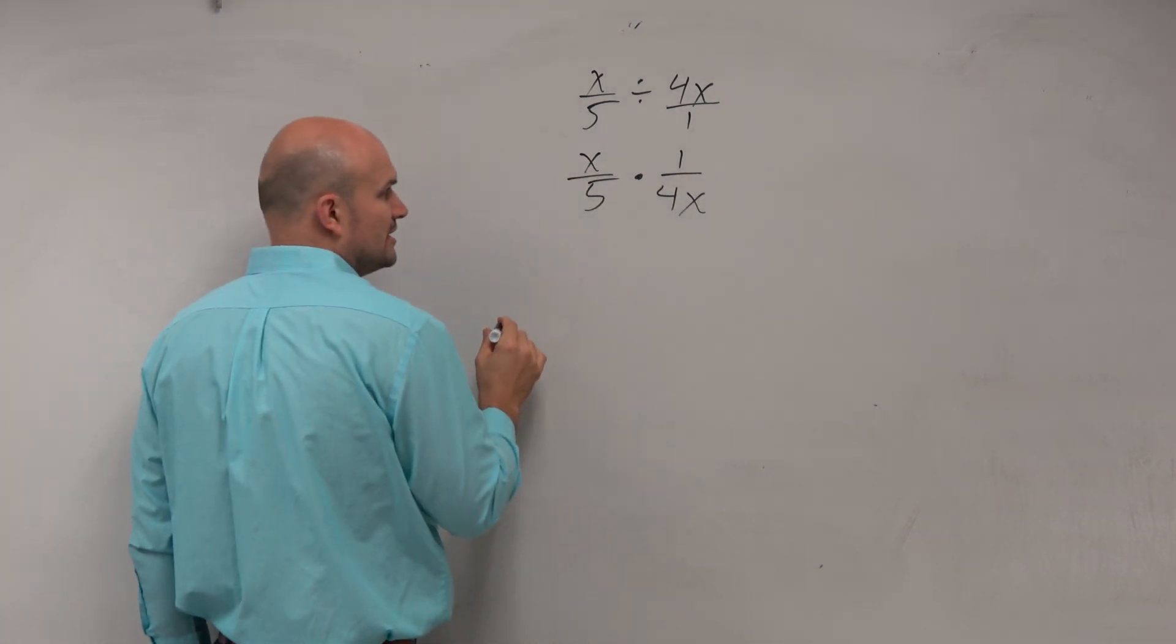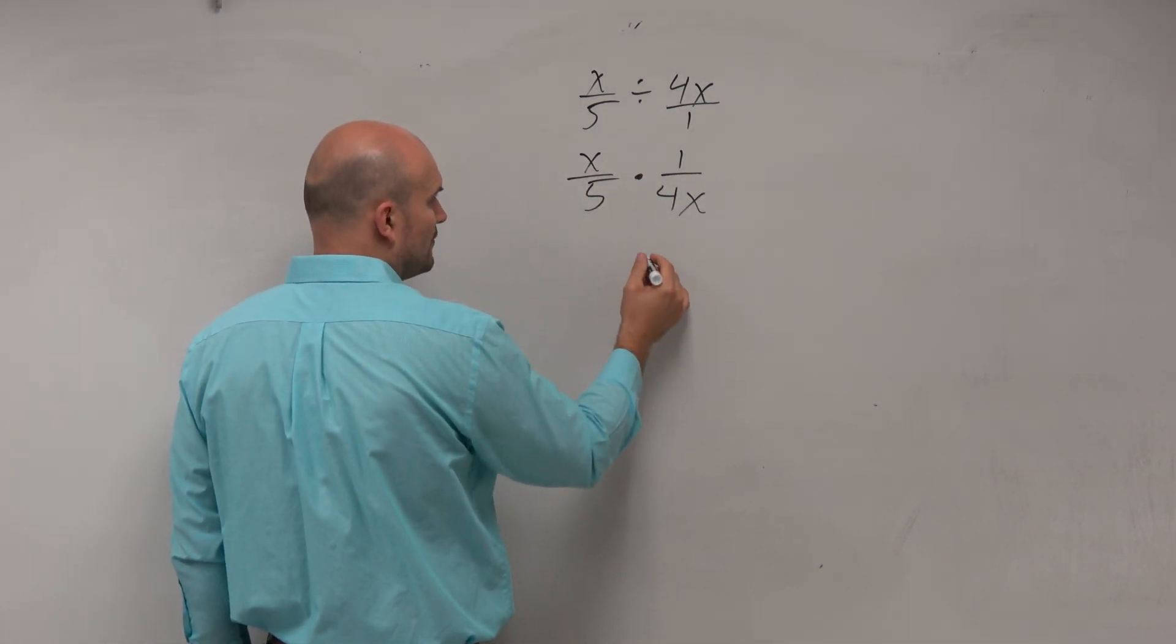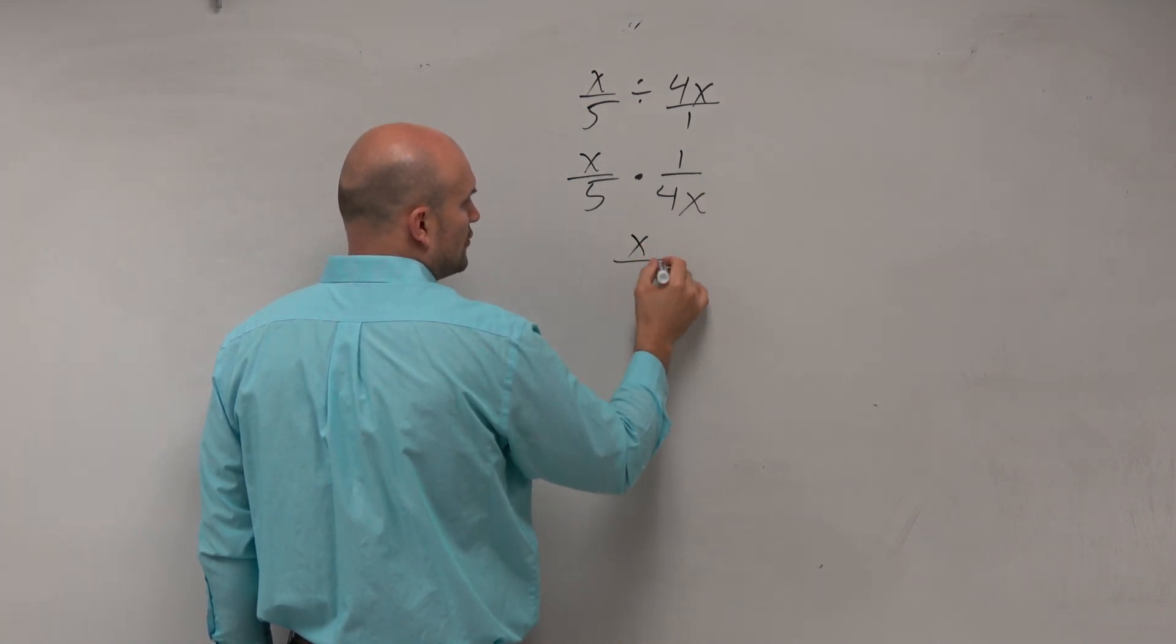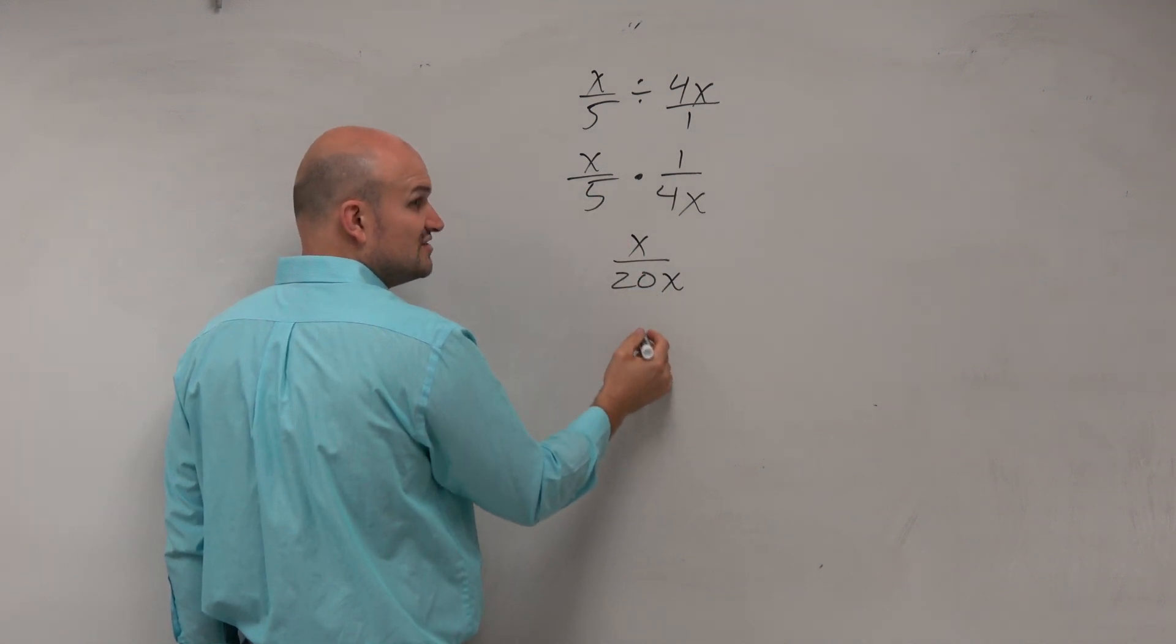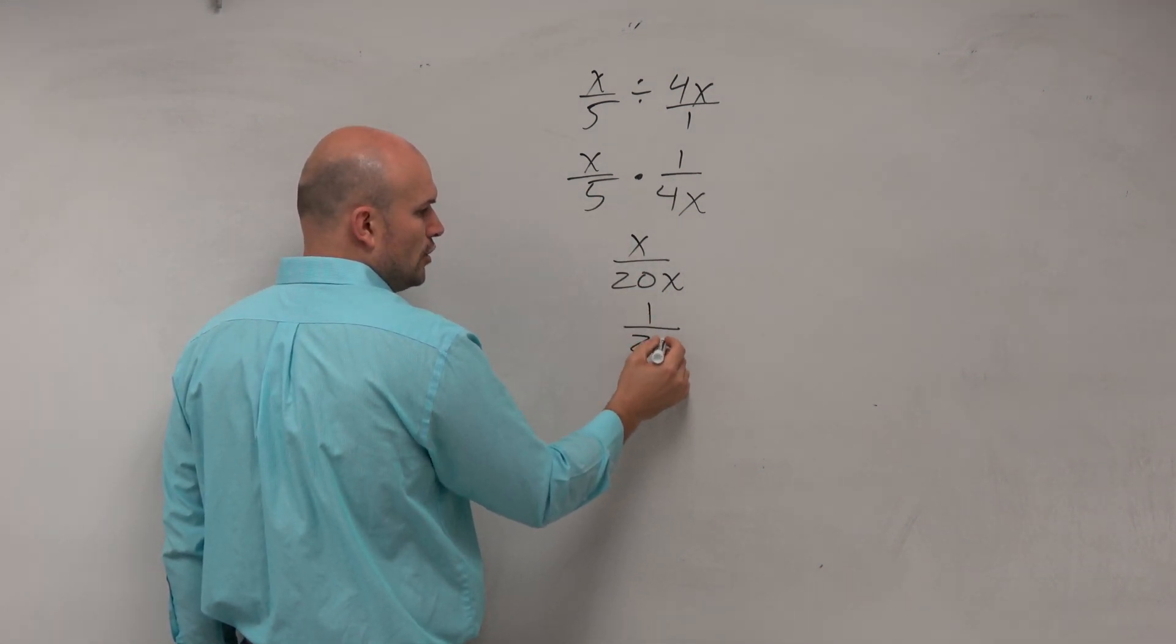Now you are going to multiply straight across. So therefore, that will obtain x over 20x. And then the x, as you guys can see, can divide out to simplify to give us 1 over 20.